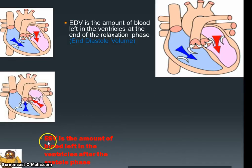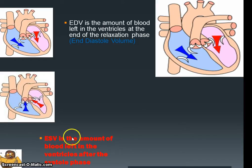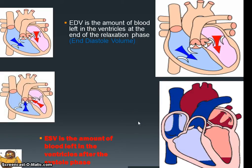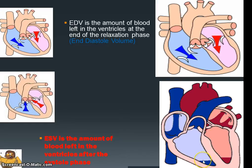We also need to know the ESV — the end systolic volume. Here we're talking about the ventricles and the systolic phase, which was active. We're trying to work out how much blood is left in the ventricles after the systolic phase of contraction. Once the ventricles have forced the blood out to the relevant areas, how much blood actually remains? This is known as our ESV, our end systolic volume.